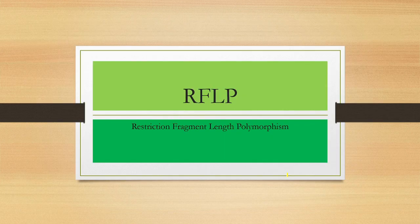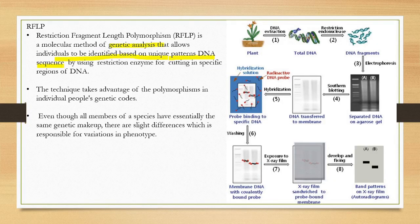The second technique is RFLP, or Restriction Fragment Length Polymorphism. This technique uses restriction enzymes. RFLP is a molecular method of genetic analysis that allows individuals to be identified based on unique patterns of DNA sequence, by using restriction enzymes for cutting specific regions of DNA.